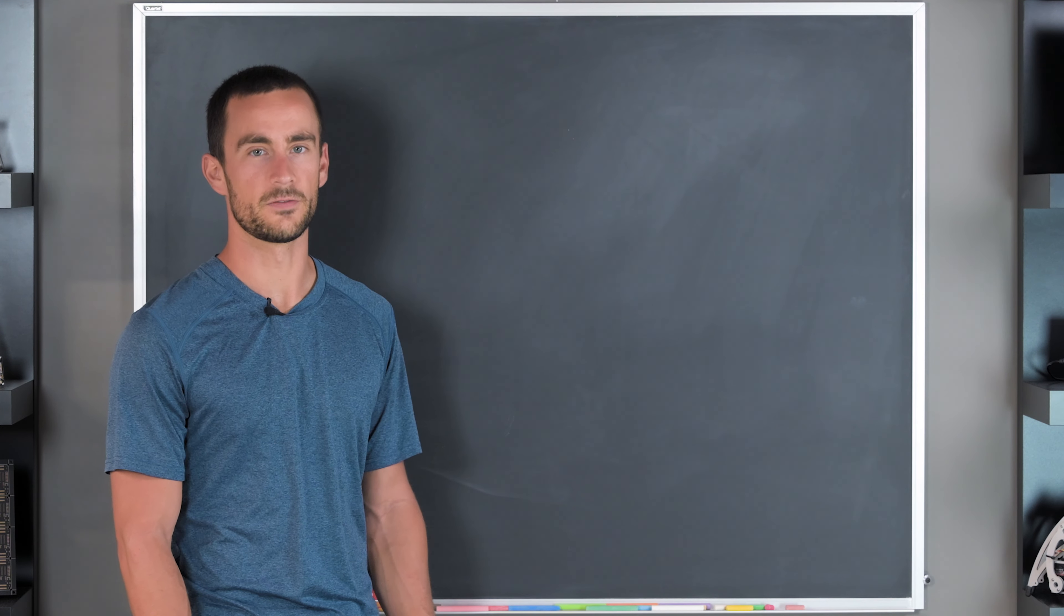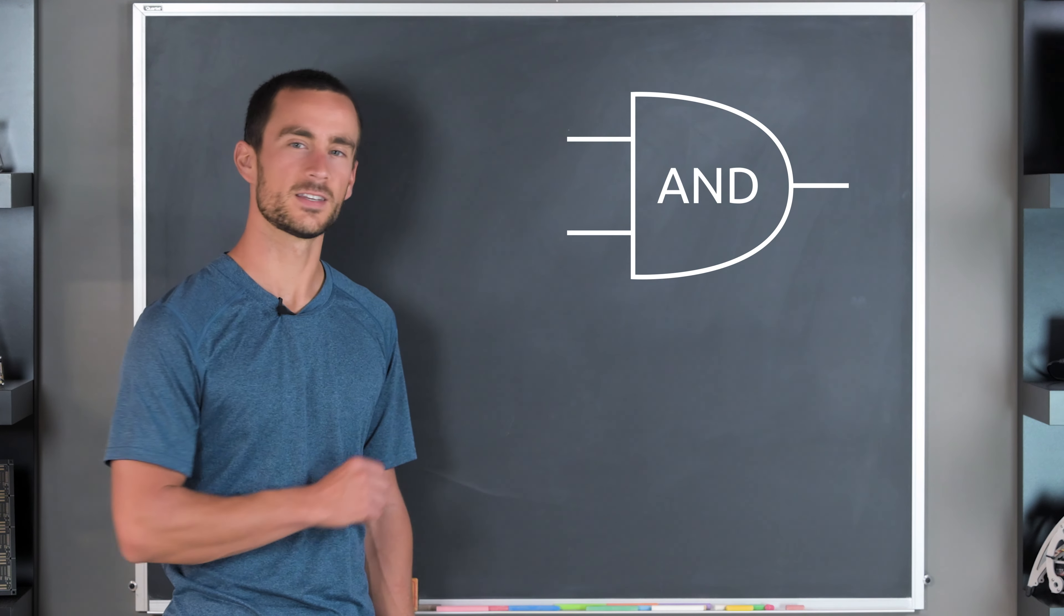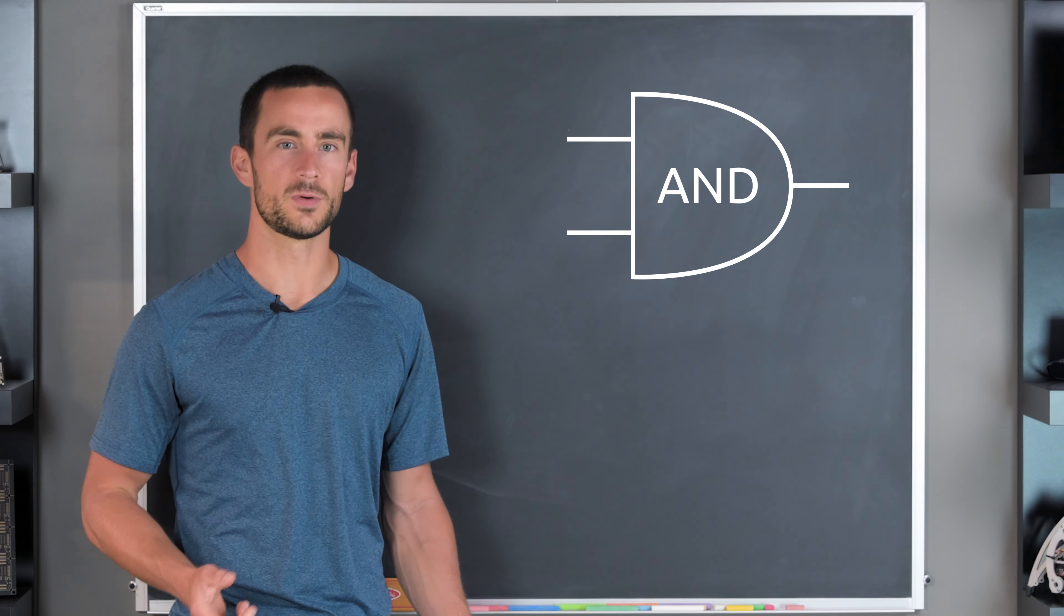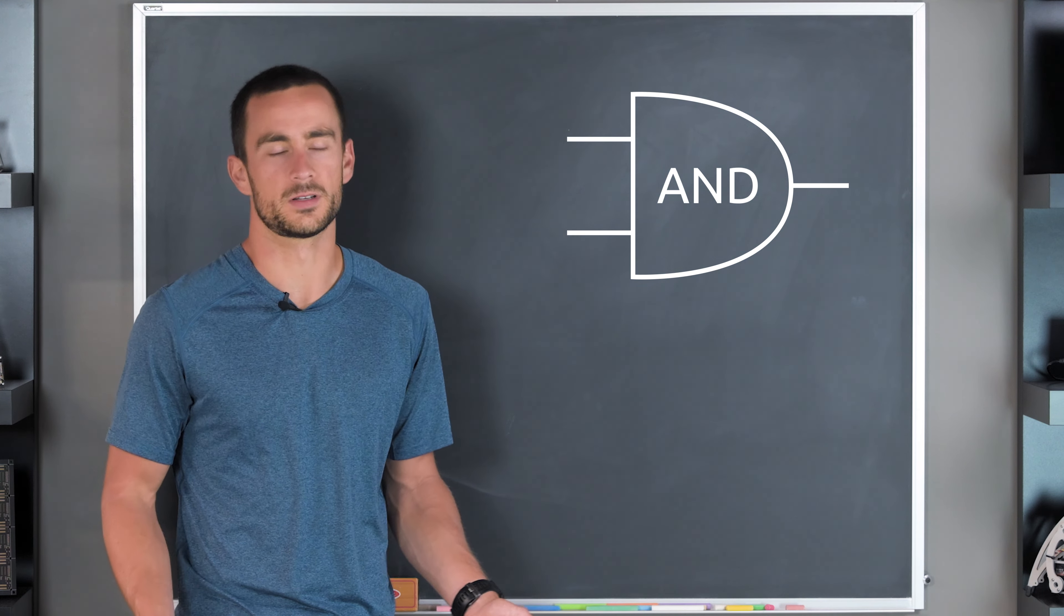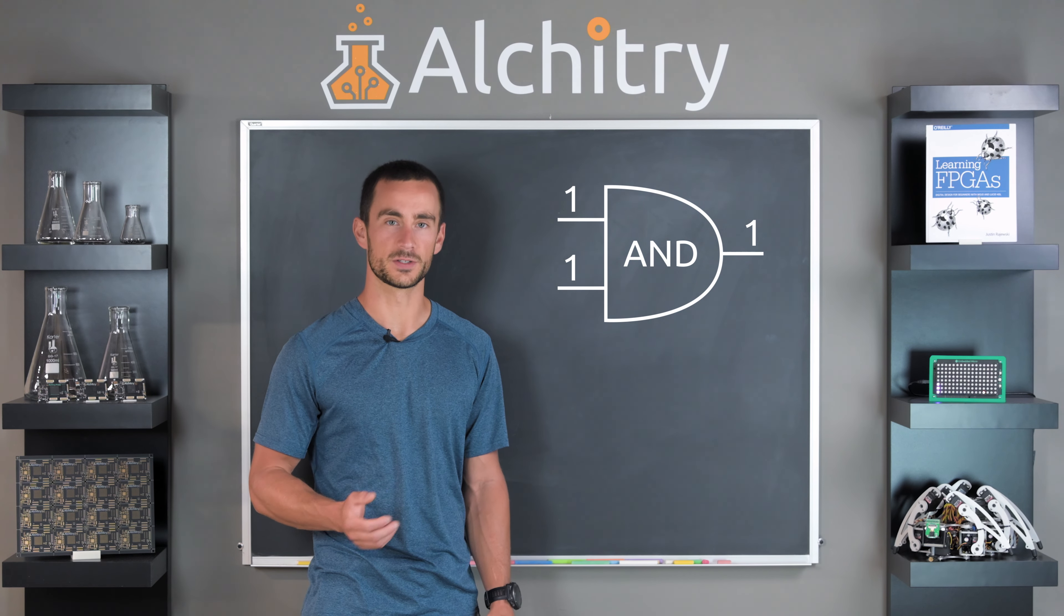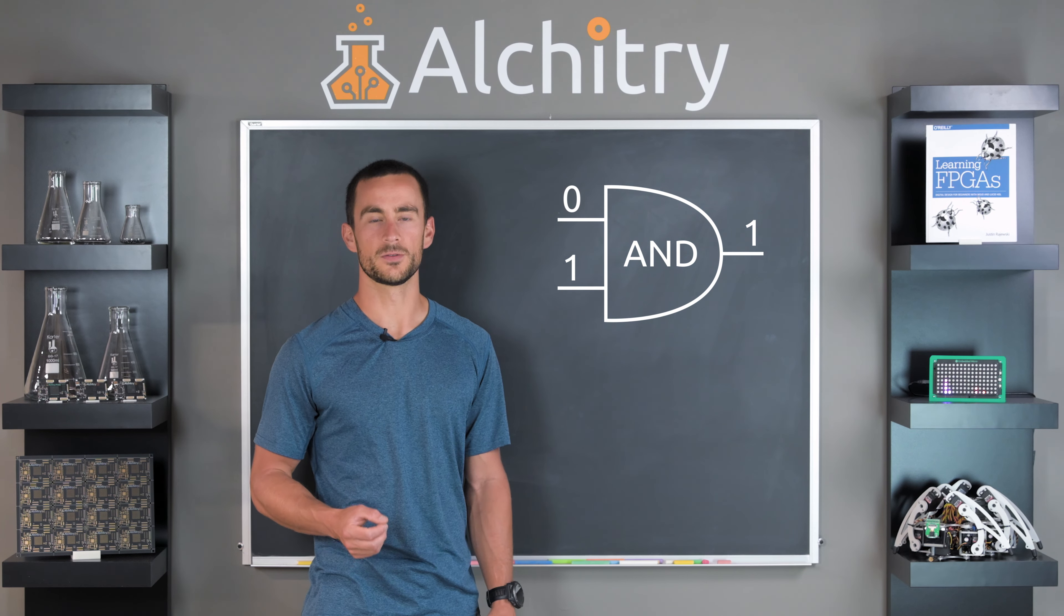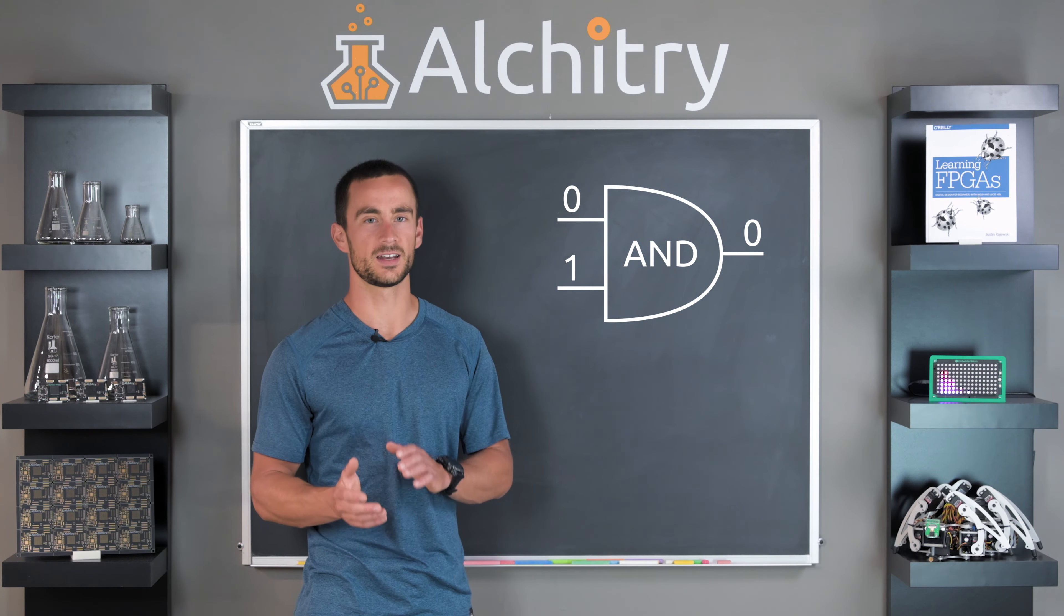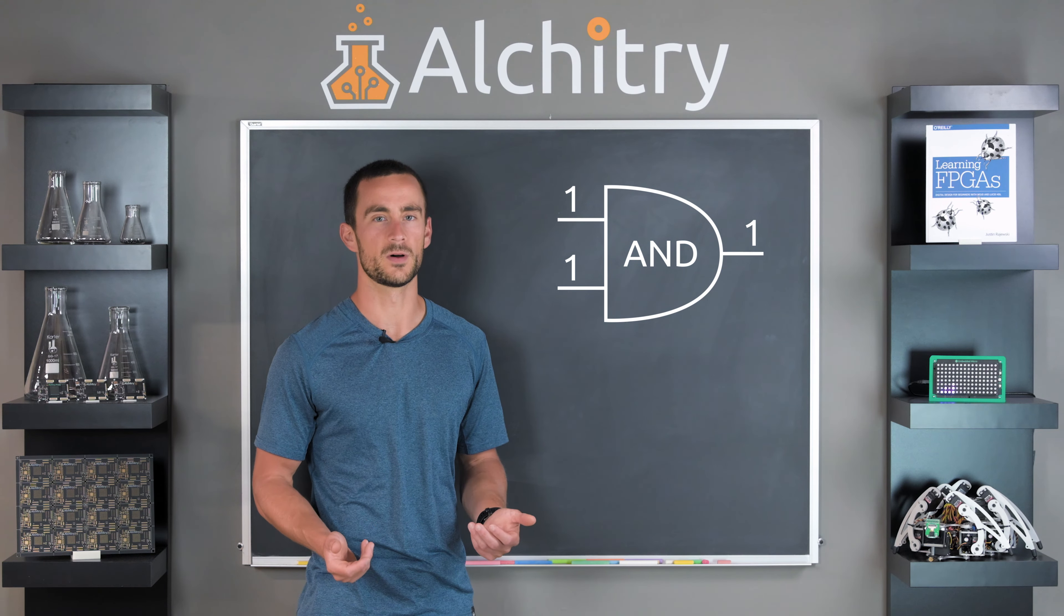Alright, so now I've shown you how robust digital circuits are, now let me show you what they can do. We'll start with the basic building blocks of everything. Logic gates. This is an AND gate. The standard version has two inputs and one output. Each one of these is a single bit, in other words, a 0 or 1. The output of an AND gate will only be 1 when both inputs are 1. If either of them is 0, then the output is 0. In other words, when the first input AND the second input are 1, then the output will be 1.